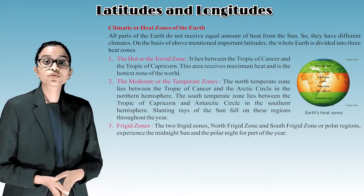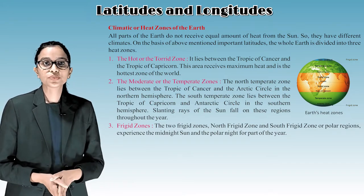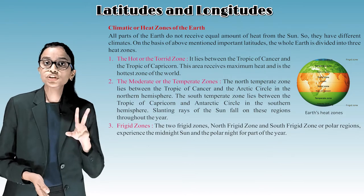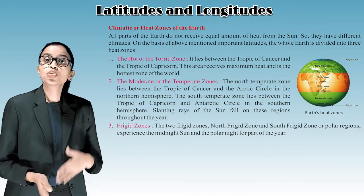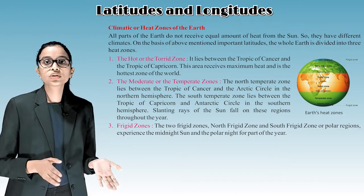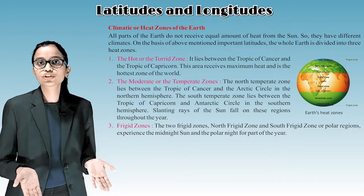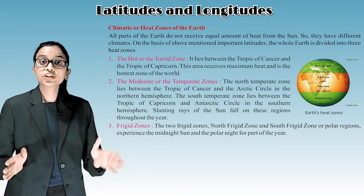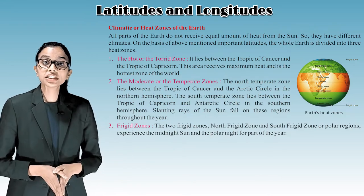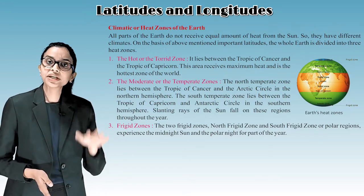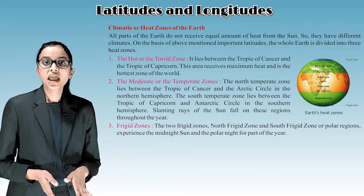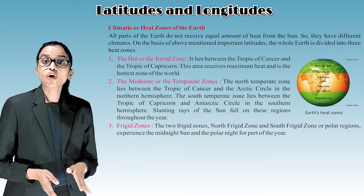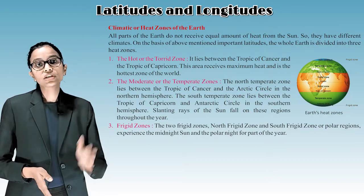The third heat zone is the frigid zone. The two frigid zones — the north frigid zone and the south frigid zone, or polar regions — experience the midnight sun and the polar night for part of the year.